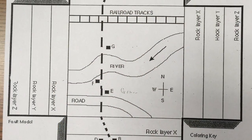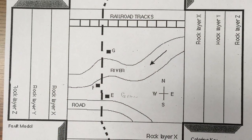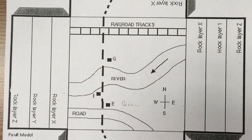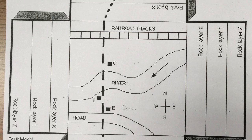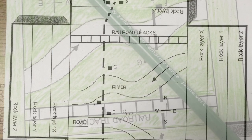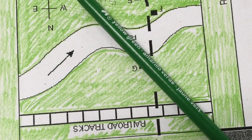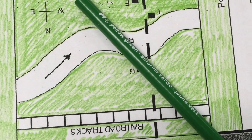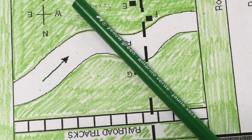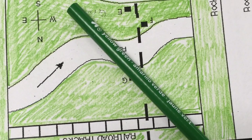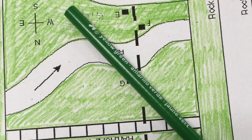Here is your paper model and this is what it looks like before we get started cutting it out. Next we're going to follow the directions and use our color pencils at our table to color in the fault model.